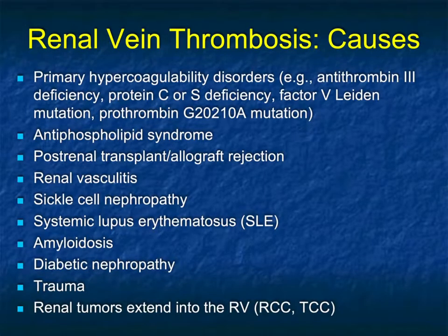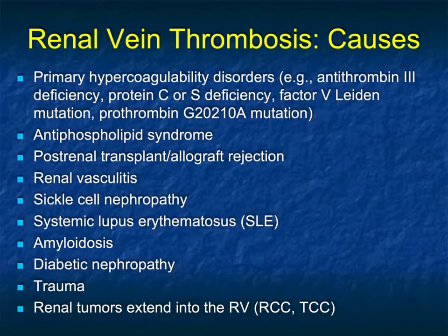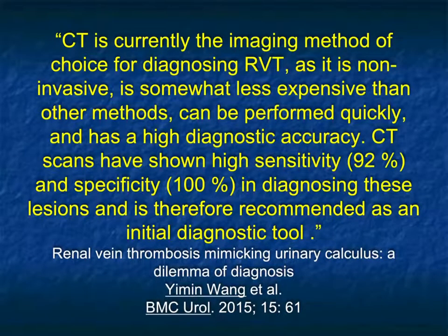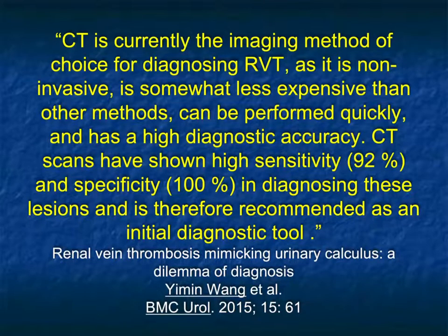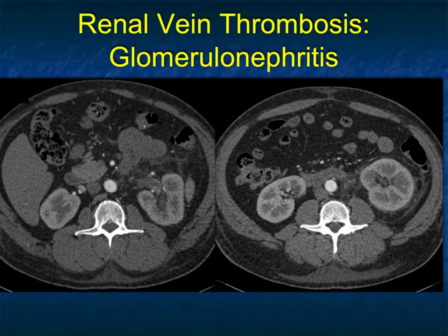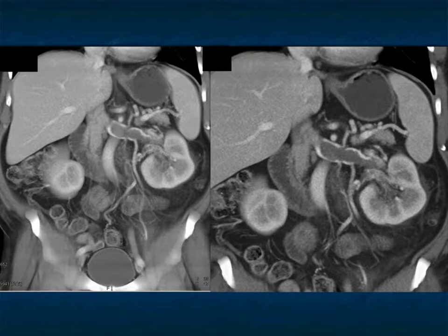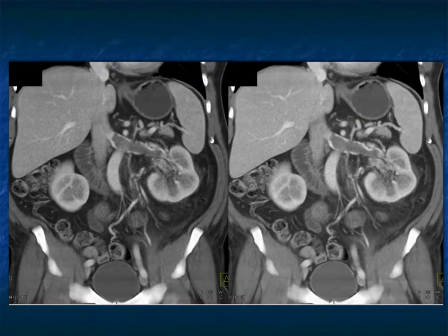With tumors it's easy — you see the tumor and the extension, most commonly clear cell carcinoma, occasionally TCCs. But when you don't see a tumor, think about hypercoagulability states or other processes. CT is the imaging method of choice for diagnosing renal vein thrombosis — non-invasive, less expensive, with high sensitivity and specificity. Here's a patient with glomerulonephritis and a shrunken left kidney — you can see thrombus in the left renal vein, very nicely shown on coronal views. There's no tumor, but a large almost-occlusive thrombus, and yet there is still pretty good function in the left kidney.